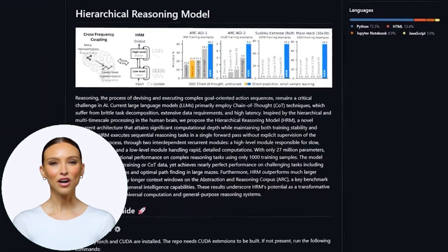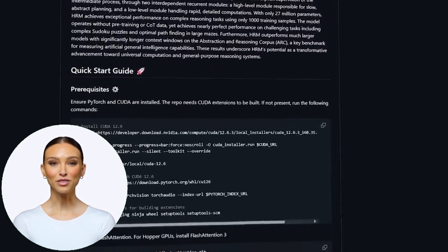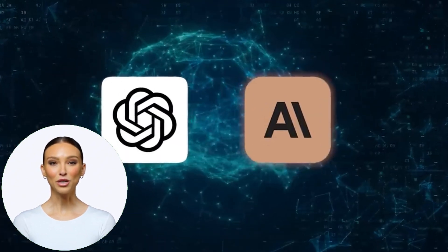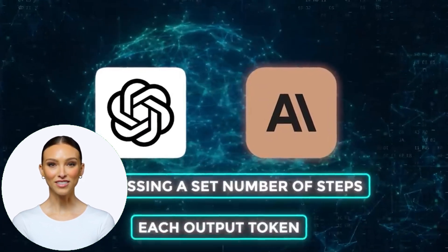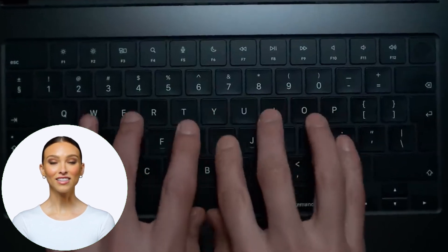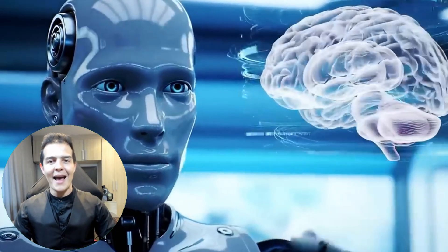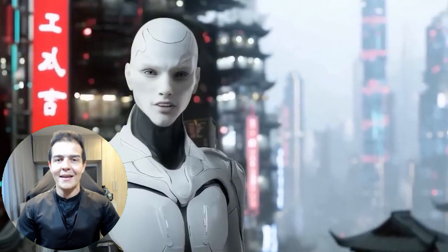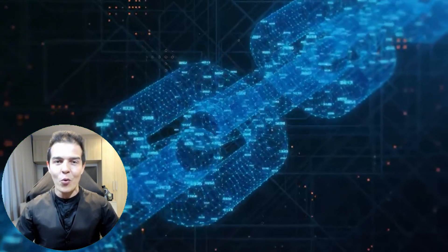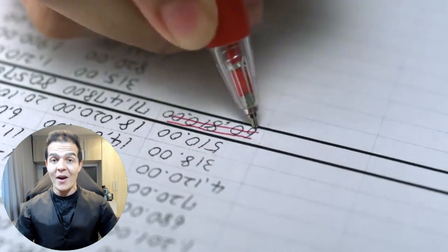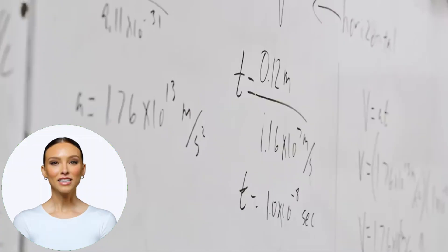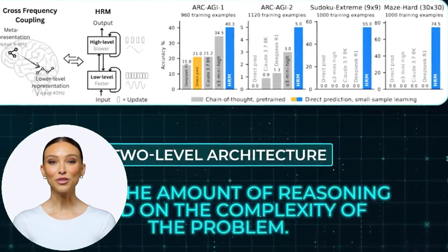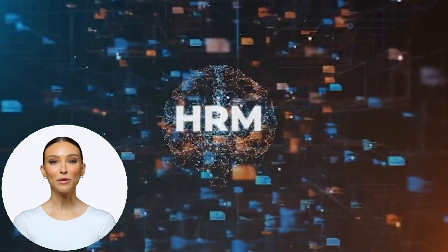And this way of building the HRM solves deeper problems of current transformer models. You know, models like GPT work with a fixed number of steps for each output token. They think the same amount, regardless of how difficult the question is. They can't stop and say, wait, this is tough. I need to think longer. Exactly. They can't go back, rethink, or rewrite the output after it starts. Once they generate a token, they're stuck with it. It's like trying to solve a math problem by writing one number at a time with a pen without being able to check if you're on the right track. The HRM breaks through that barrier. Its two-level architecture allows it to adapt the amount of reasoning based on the complexity of the problem. There's even a version that uses reinforcement learning to decide for itself how many iterations it needs.